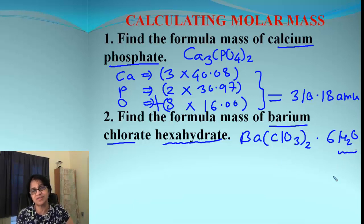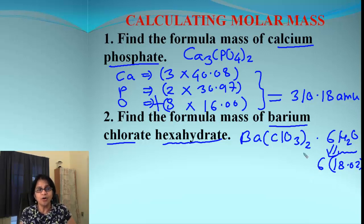So each molecule of water will contain two atoms of hydrogen and one atom of oxygen. When we add that, that comes out to be 18.02, and six times that will give me the mass for six molecules of water. Now how do we get the mass for barium chlorate? Barium is one atom, chlorine is two, and oxygen is six.